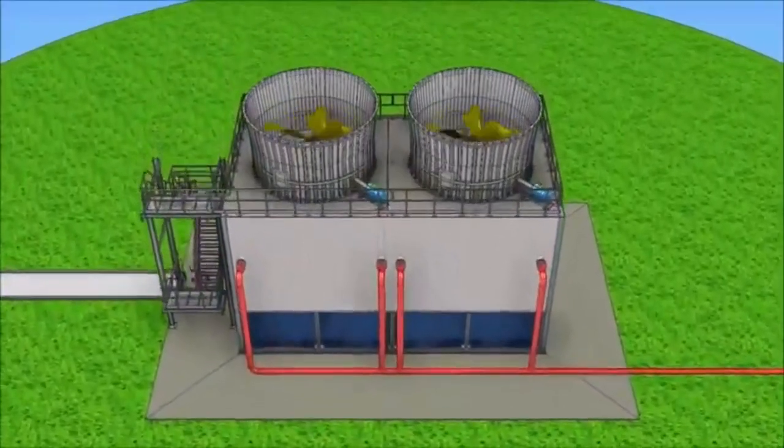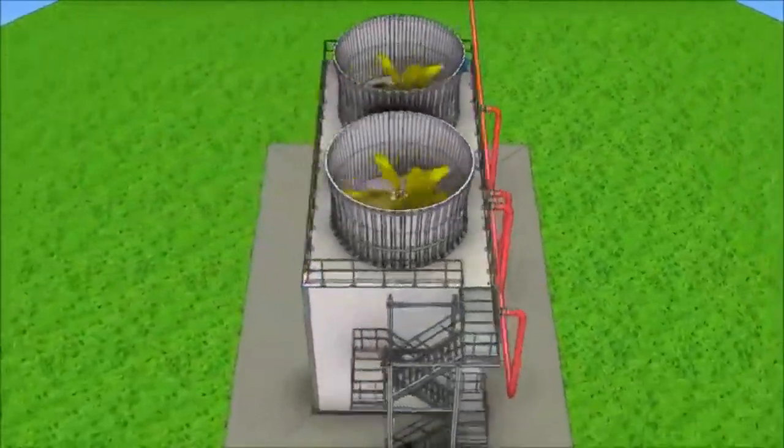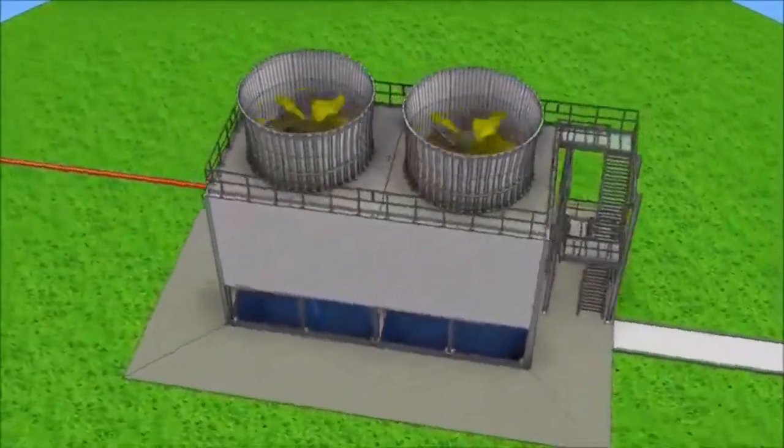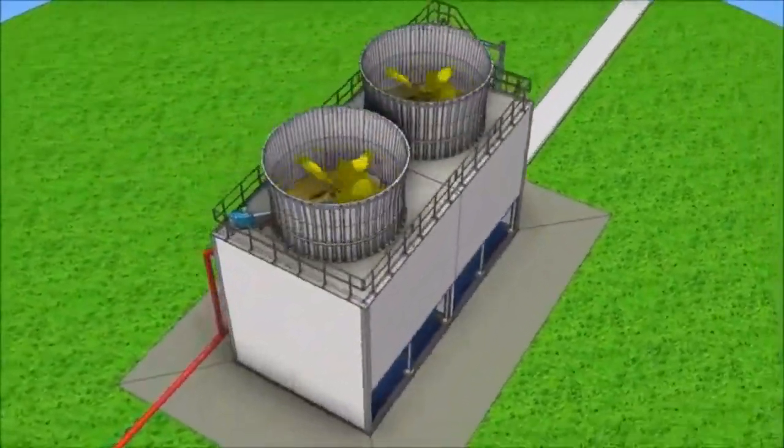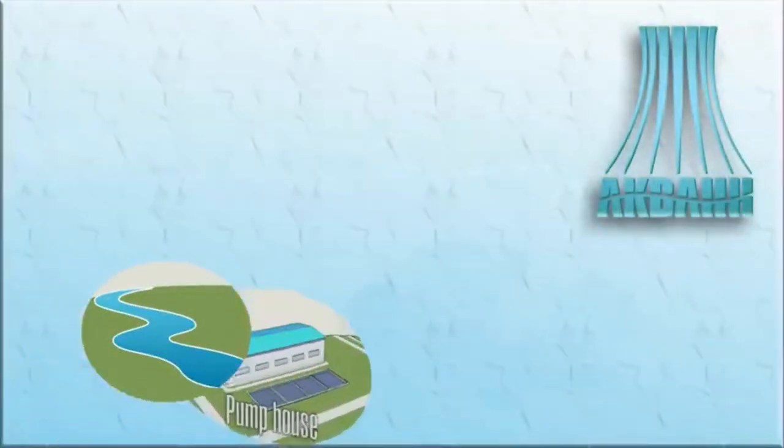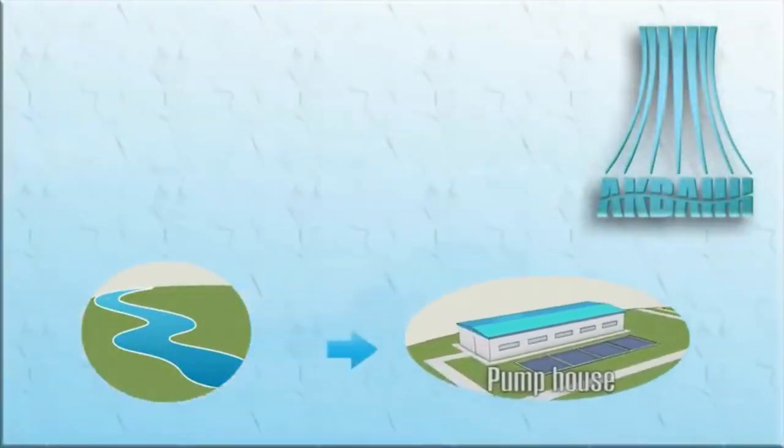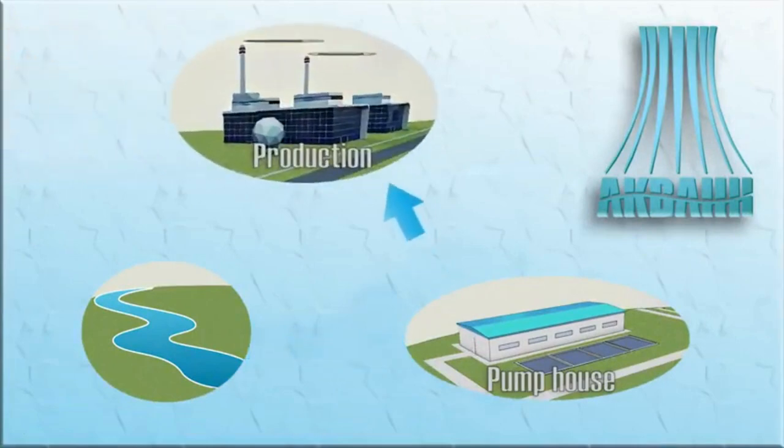The cooling tower is a device for cooling large quantities of water which circulate in a water recycling system. A circulating water system is a system in which water is used as the refrigerant for cooling heat exchange equipment.